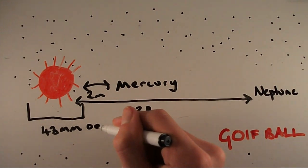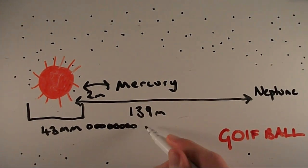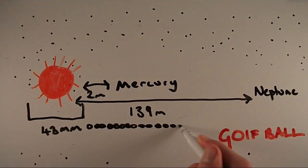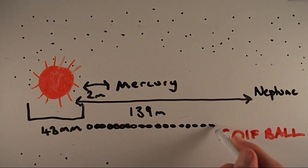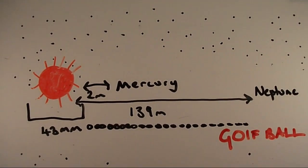If you were to put 3234 golf balls next to each other, you would reach Neptune. You'd also need 107 golf balls to reach Earth. Our solar system is massive.